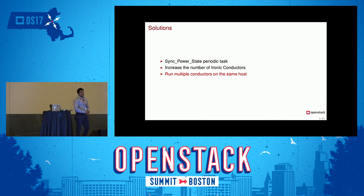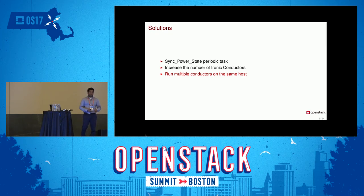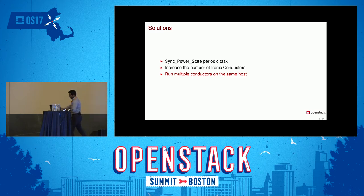One solution is to run multiple conductors on the same host. This is tricky because of how Ironic conductor is designed — whenever it comes up, it automatically fetches the hostname of the machine and uses it as an identity. We only had two servers with 24 cores each, giving us 48 cores total, but Python processes are normally bound to one CPU. So we added a small patch, similar to an API worker patch, to spawn N number of conductors.